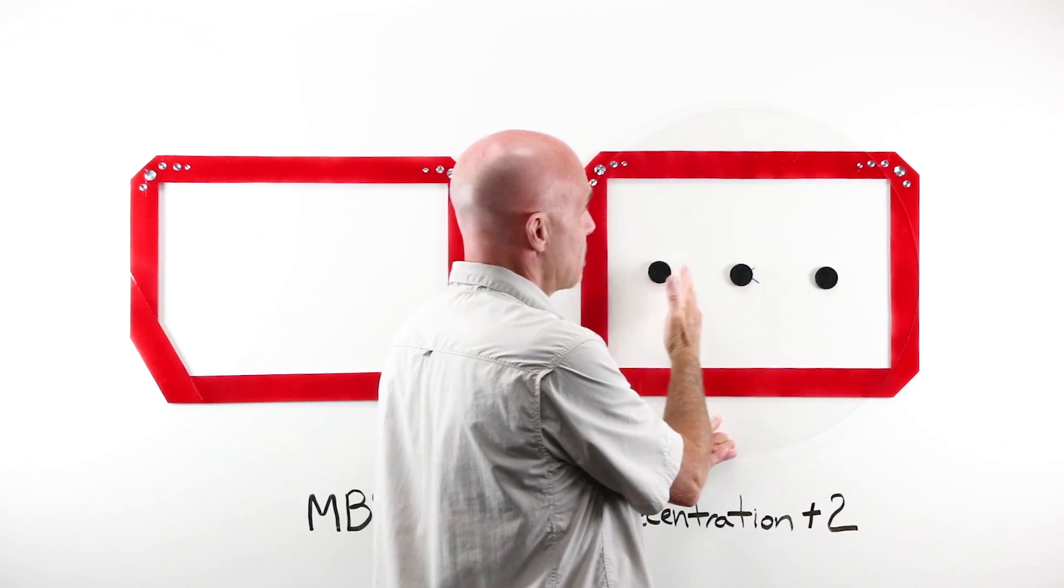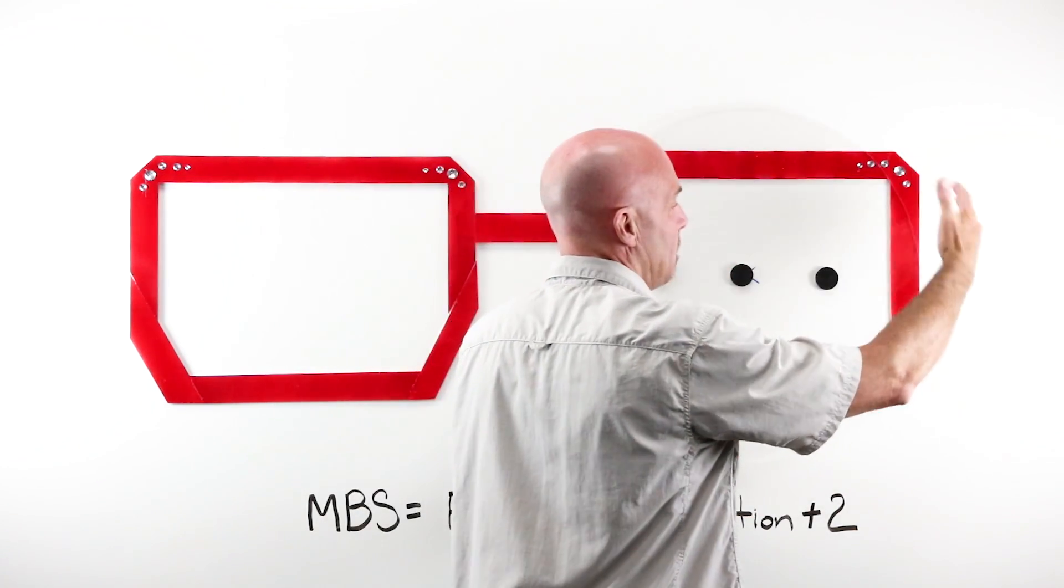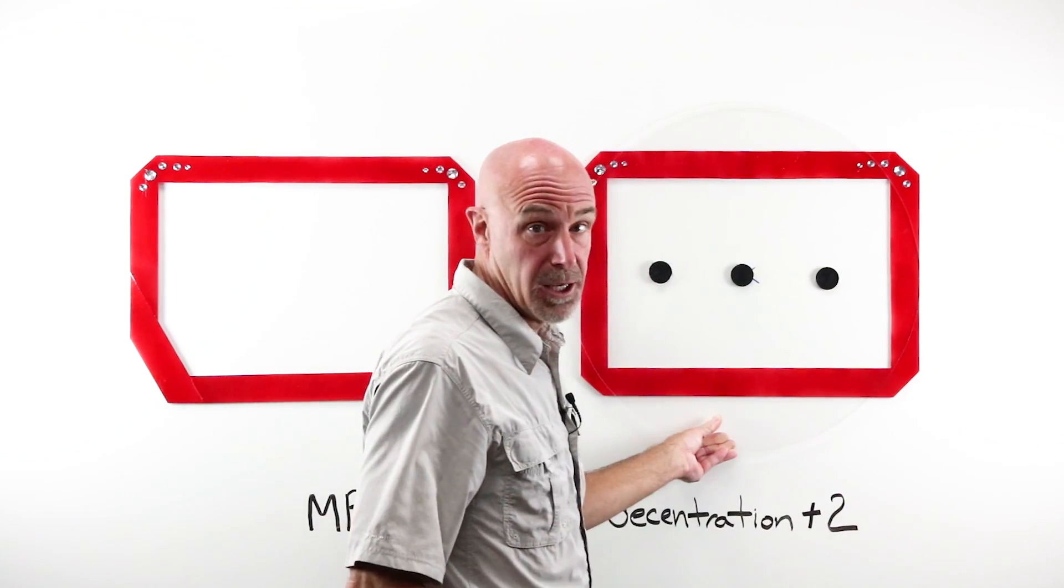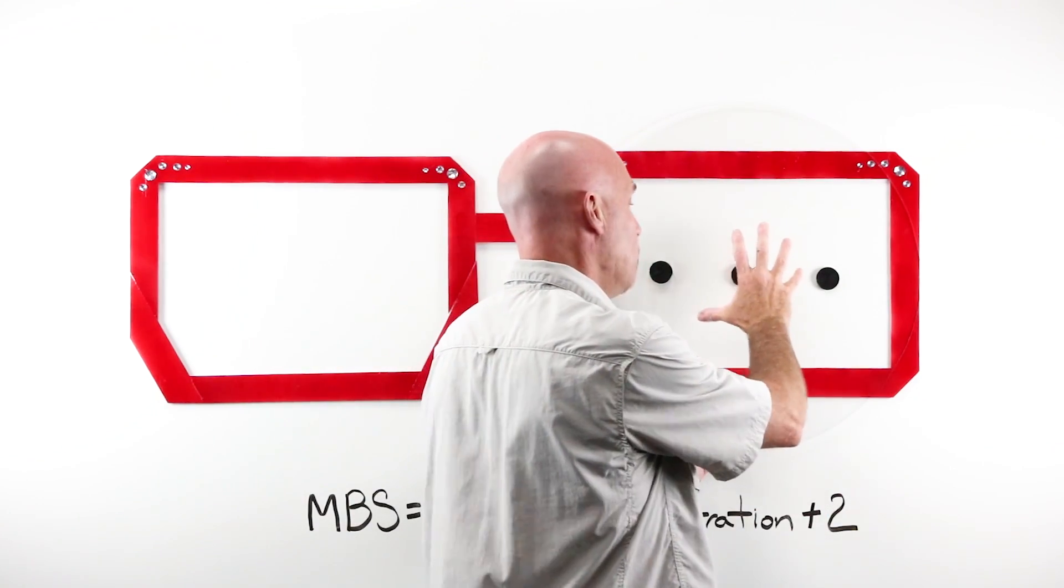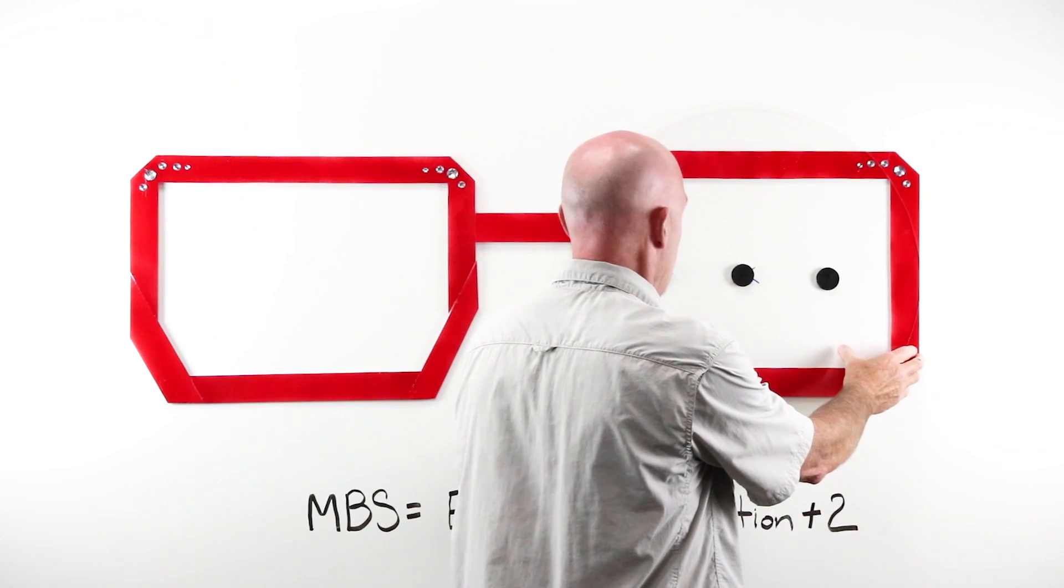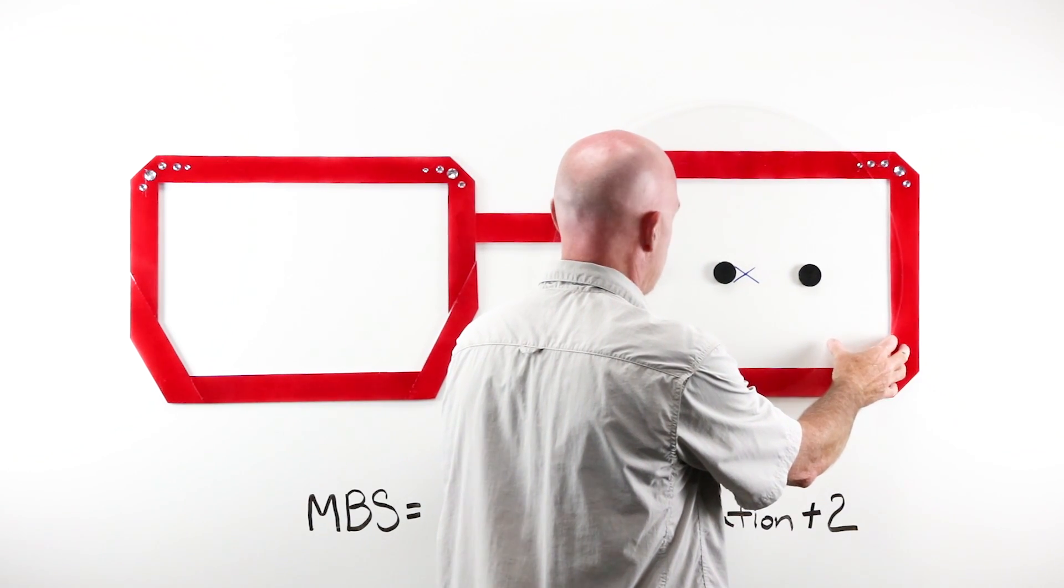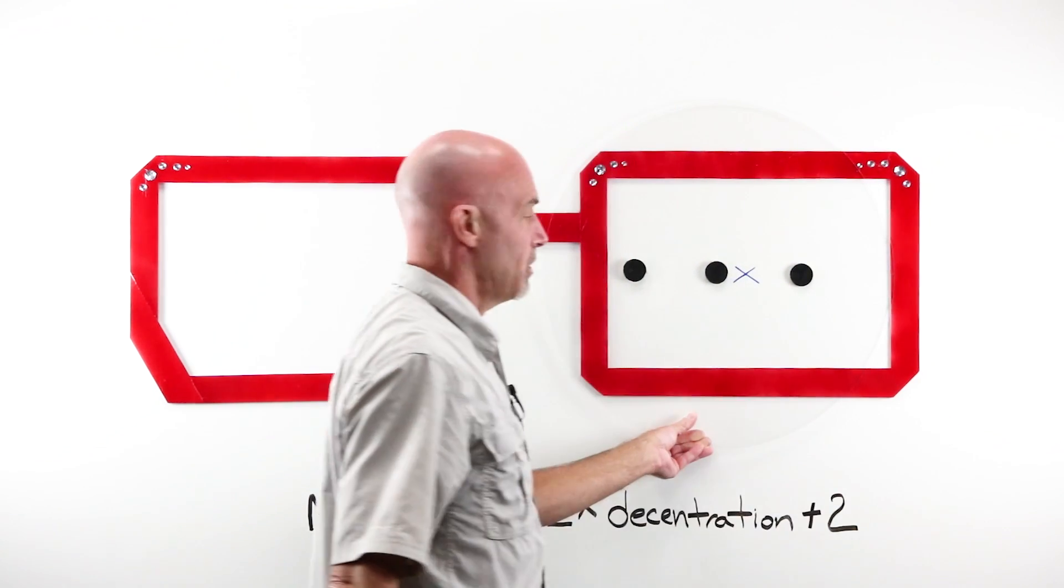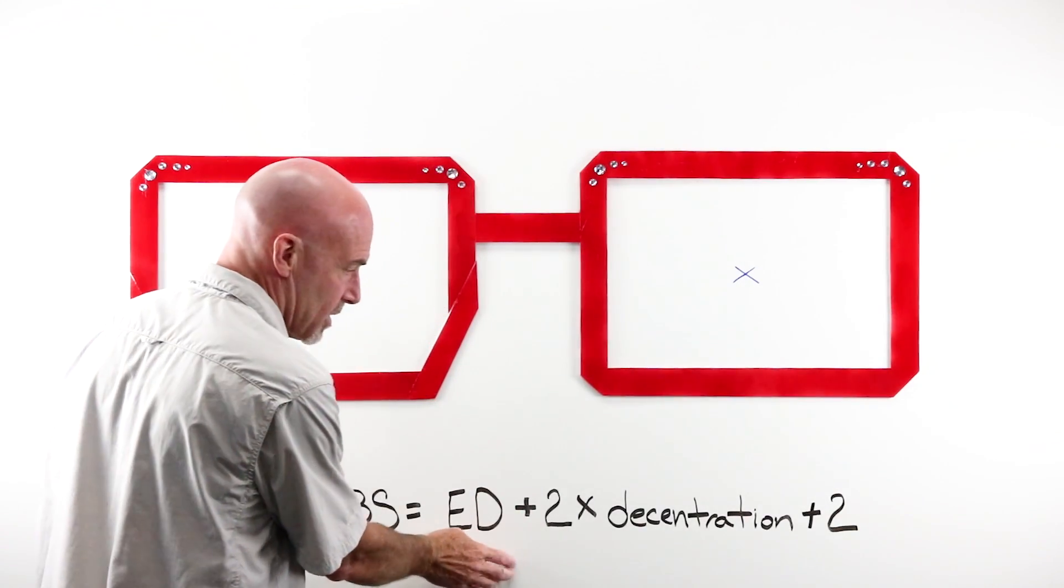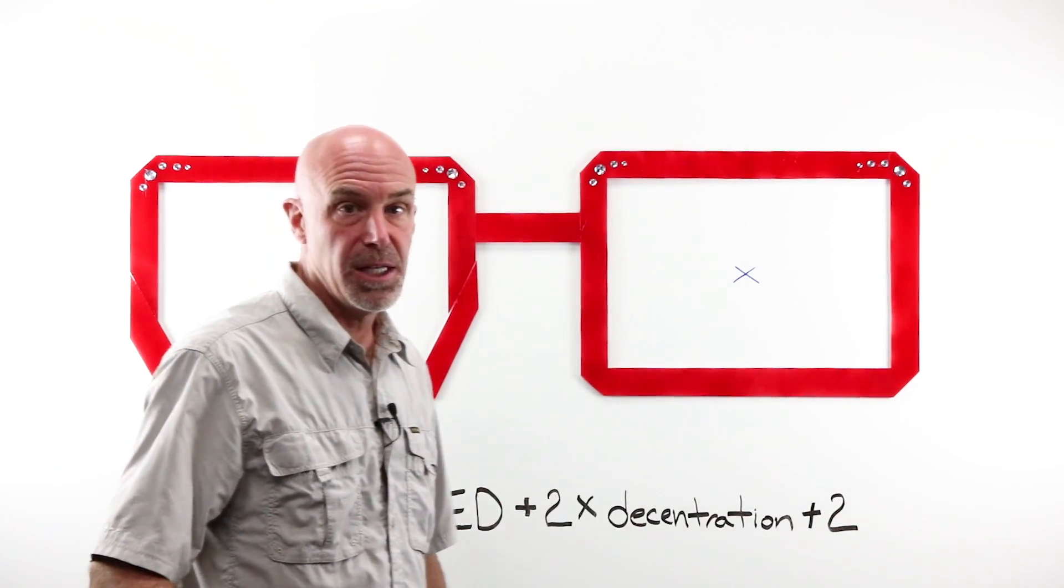If I needed to decenter this lens even more, I would need an even larger blank. To determine how large a blank I would need, if I needed to decenter it way over here somewhere, I can use this and have a pretty good idea.